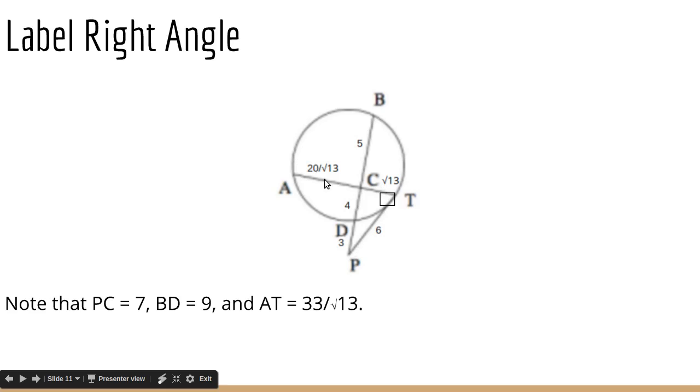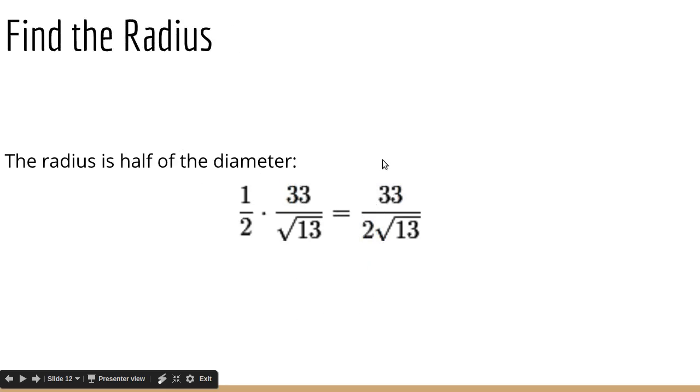And I think they were trying to confuse us. So that's, I think, that's the hardest part of this problem. Figuring out that AT is actually the diameter of the circle. So hopefully you can understand how triangle PCT is a right triangle with hypotenuse PC because of the Pythagorean theorem. And that makes AT a diameter. So 33 over square root 13 is our diameter. So the radius is half of that. So it's 33 over 2 square root 13. And then finally we have radius and we have BD.